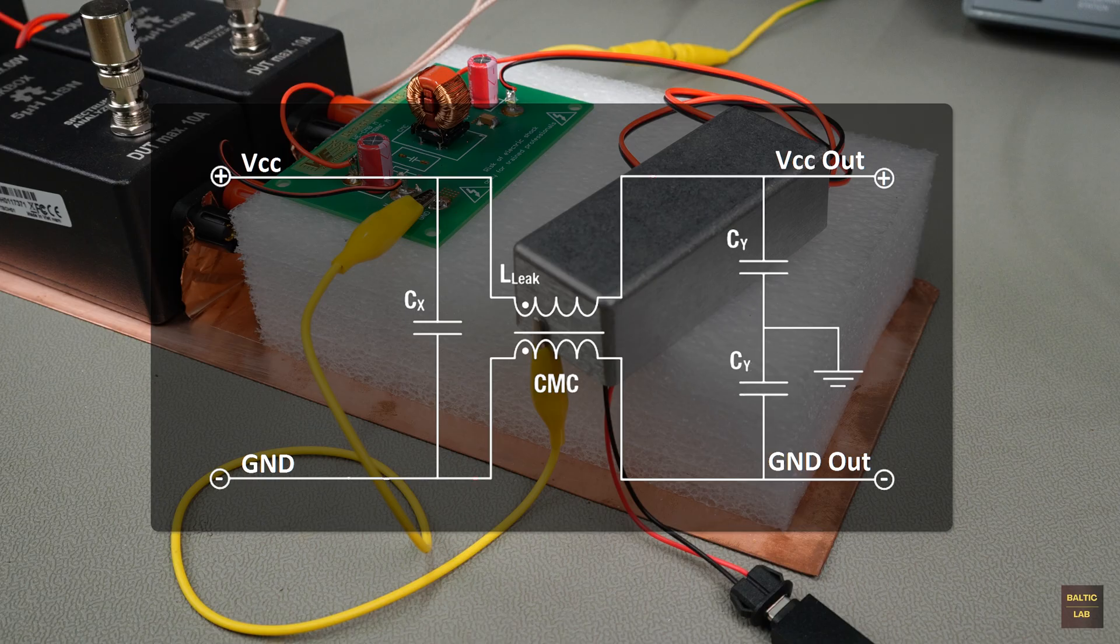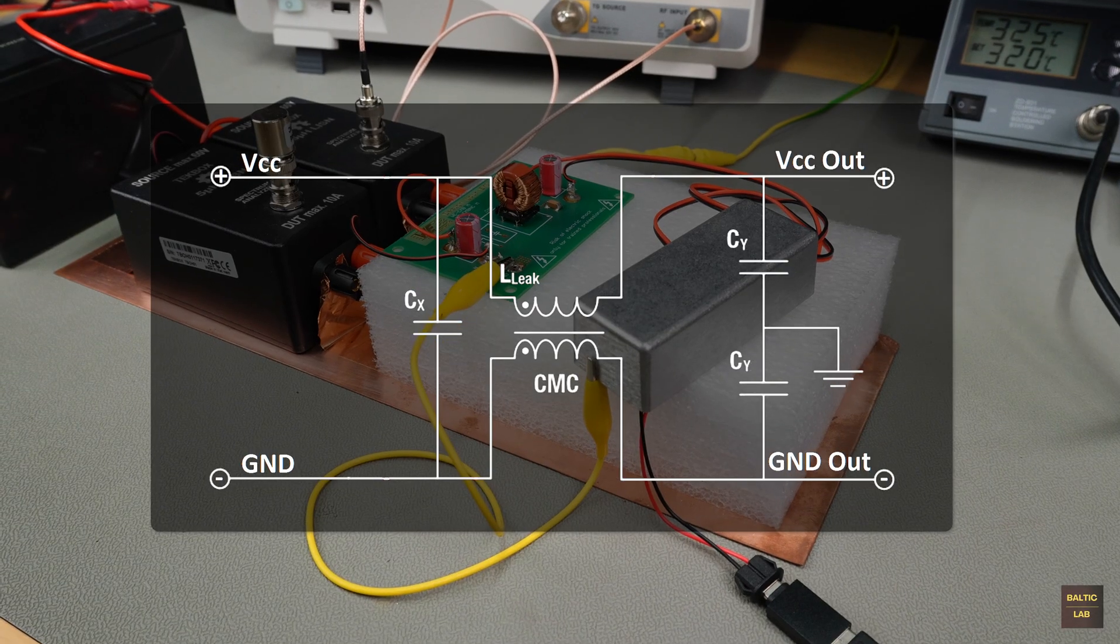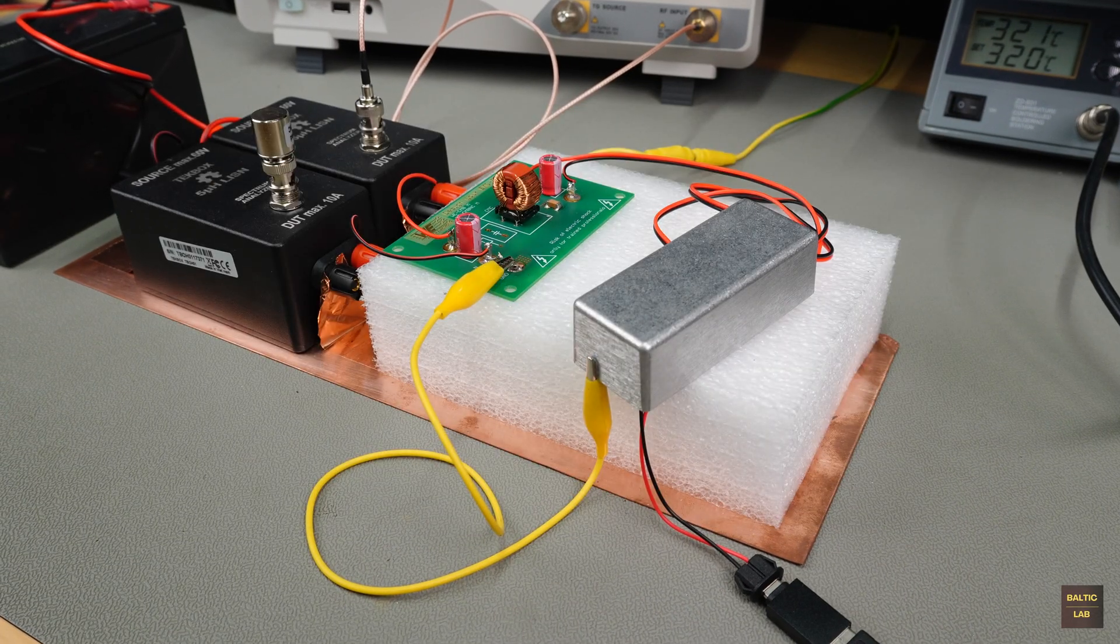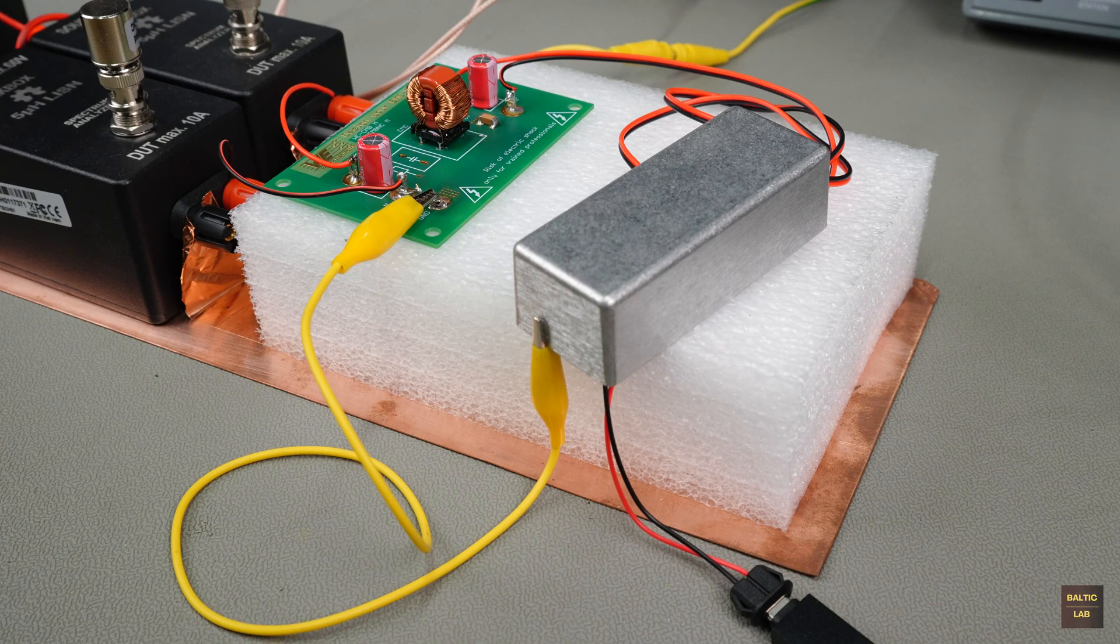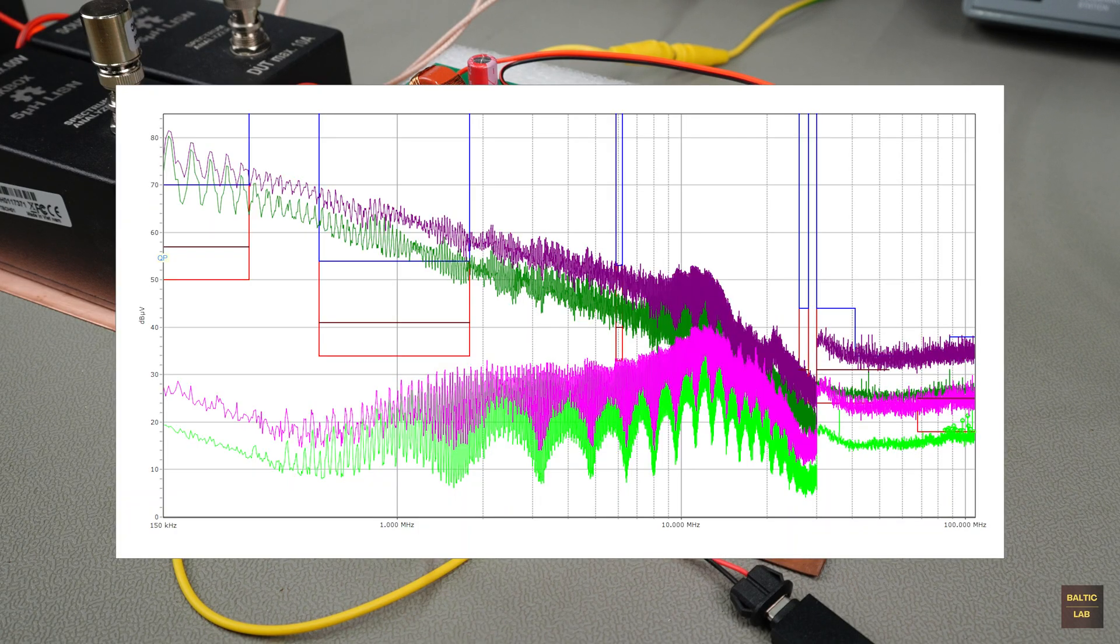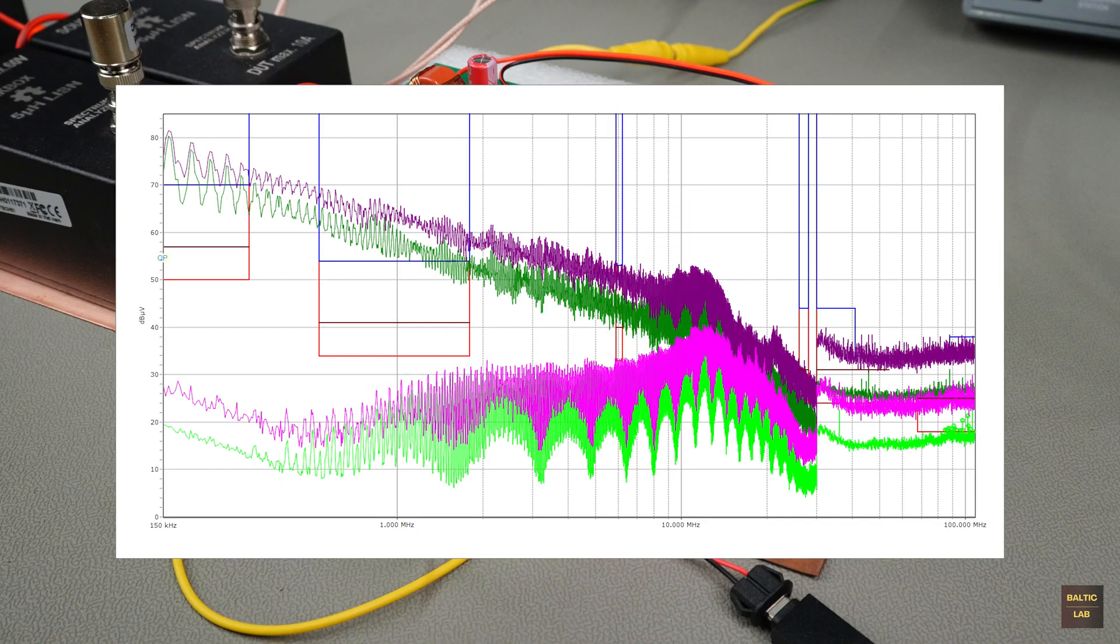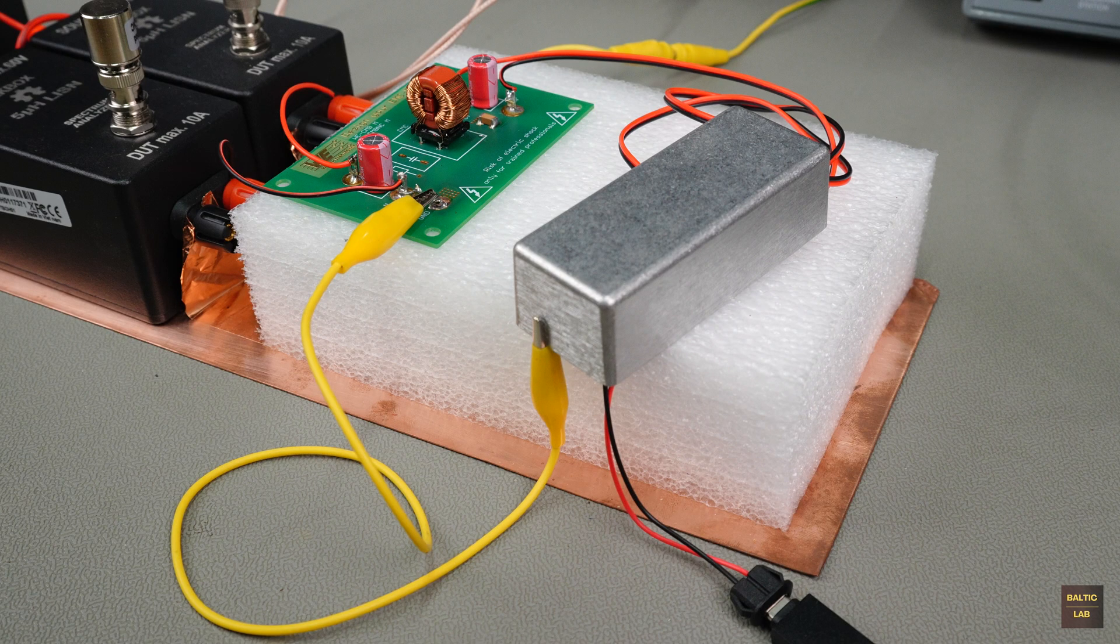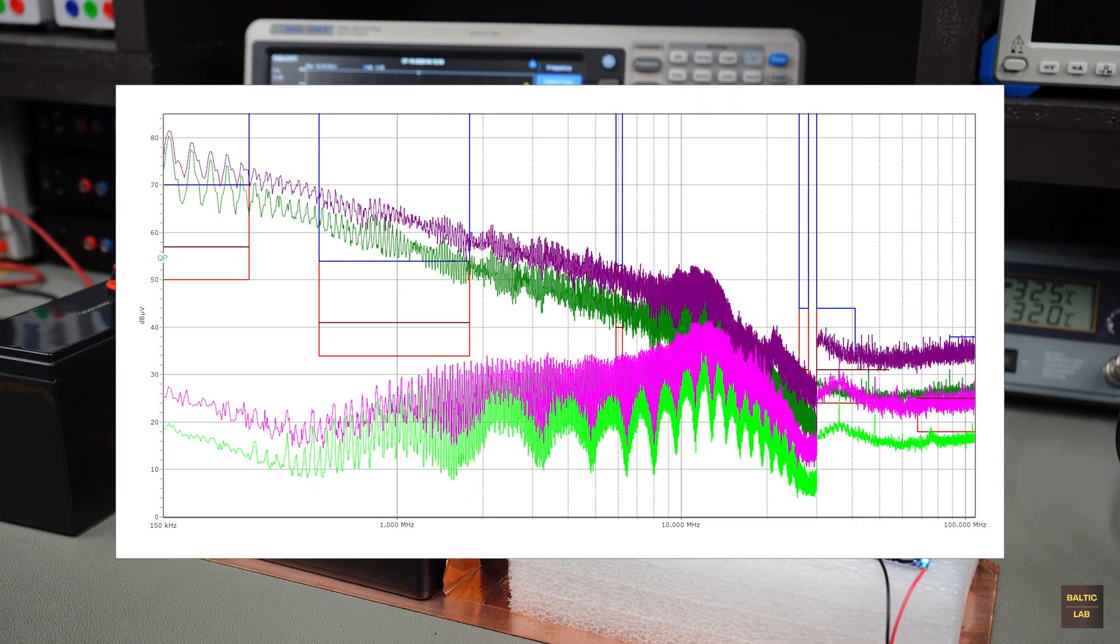Y capacitors only work if they are connected to a grounding point that's isolated from the power lines. A conductive enclosure or the vehicle's chassis, for example, could serve as a suitable connection point. To demonstrate this, a metal housing is placed over the buck converter and connected to the Y capacitors. The result? Common mode noise is now much better suppressed. However, I won't pursue the shielding approach further here. Not just because radiated emissions and shielding will be the subject of another video, but also because even this setup isn't truly effective. If you simply leave the Y capacitors unconnected, the measurement result is nearly identical.